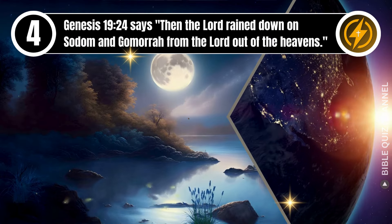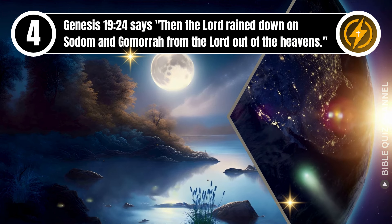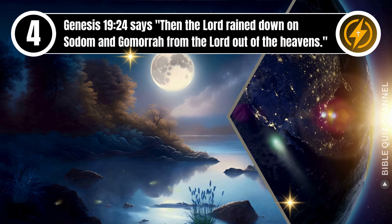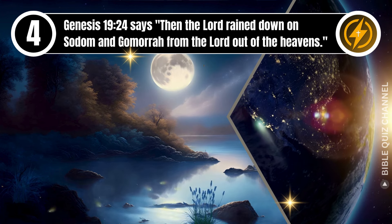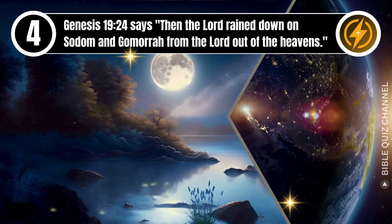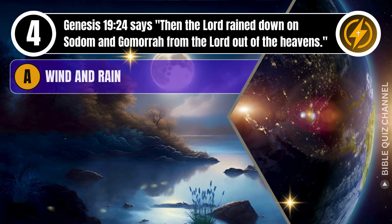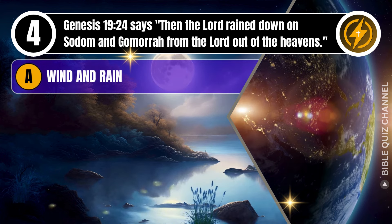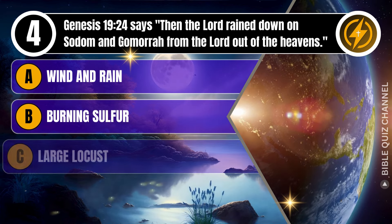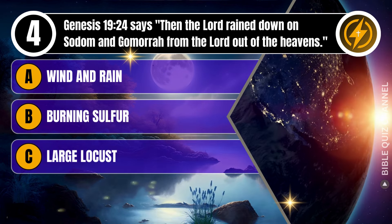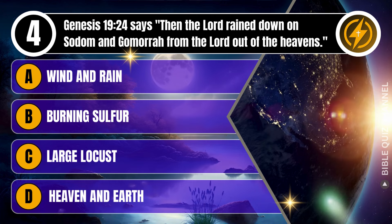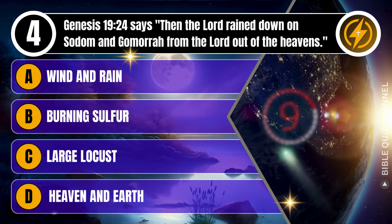Question 4. Genesis, chapter 19, verse 24 says, 'Then the Lord rained down on Sodom and Gomorrah from the Lord out of the heavens.' A. Wind and rain. B. Burning sulfur. C. Large locust. D. Heaven and earth. You get 10 seconds.